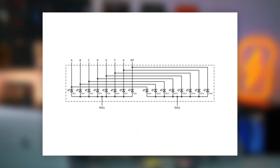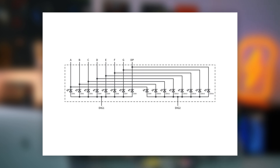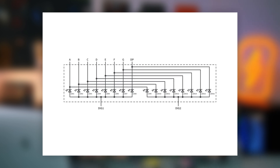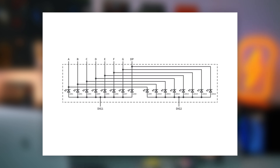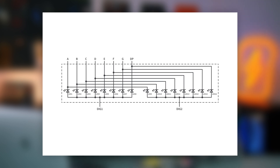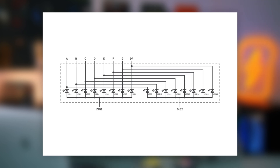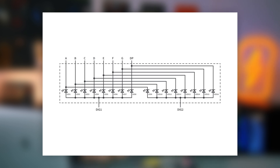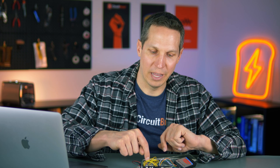The difference is that on a dynamic indicator, each segment for each digit for each character is connected to the same GPIO. So if we go through and say segment A, B, C, D, E, F, G on each one — segment A of the first digit, segment A of the second digit, and segment A of the third digit are all connected to the same GPIO on the microcontroller. But the common anodes are connected to different GPIOs, so we have digit one, digit two, and digit three with their common anodes separated.